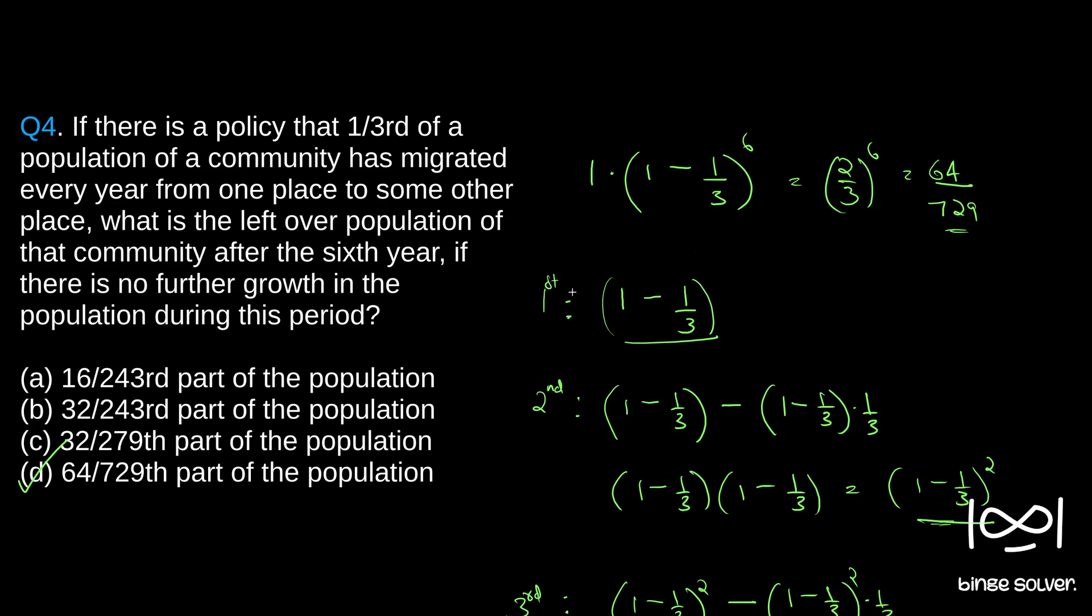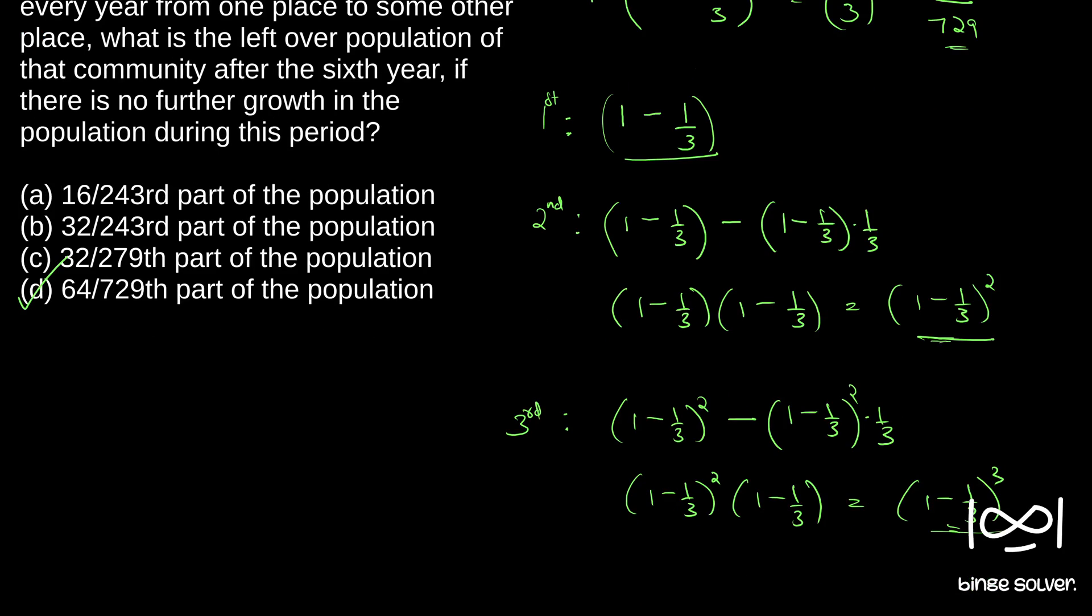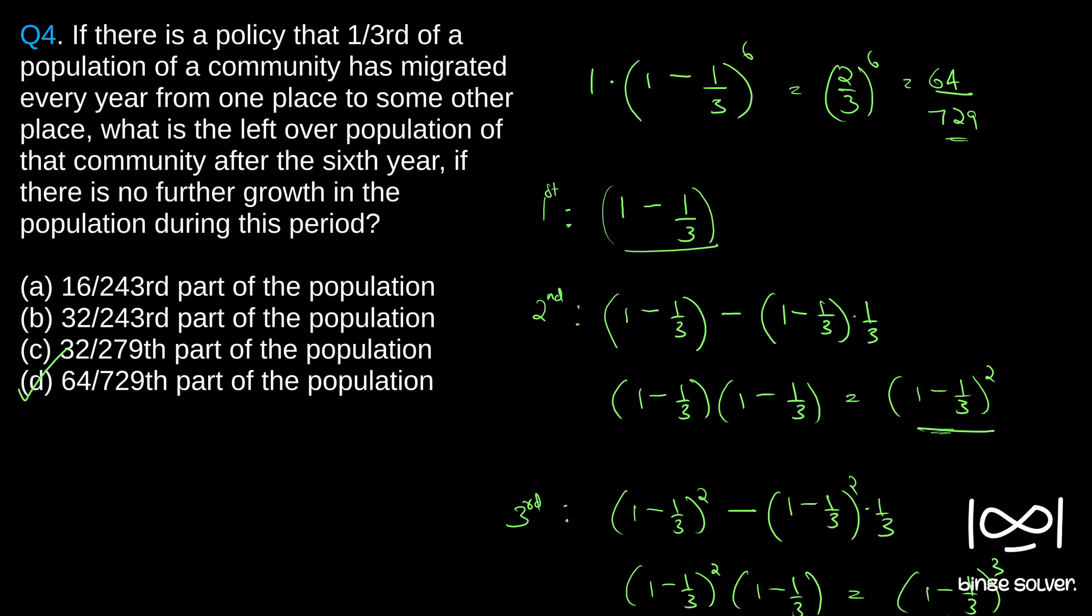If you know the answer, you could arrive at the final answer in just few seconds. Even if you didn't know, you could simply write it down like this and see that it is a pattern. And by the second time itself you will see the pattern coming up, or even at least by third time you will see it is 1 minus 1 by 3 the whole cube and you can say basically it will be 1 minus 1 by 3 raised to 6. So that is the solution. Solution to question 4 is D: 64 by 729 part of population.